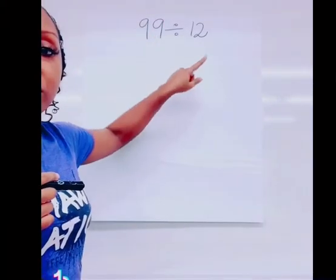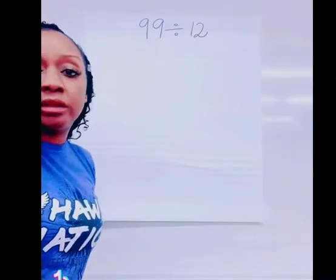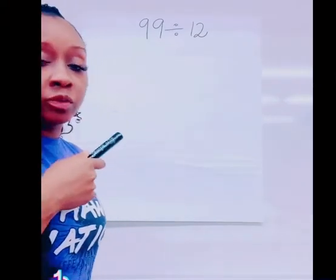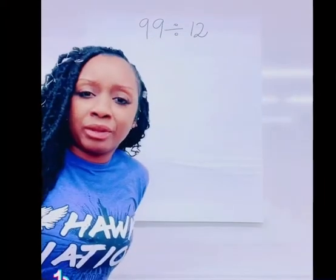This means that I'm going to start off with 99 of whatever, let's say dots. I'm going to break them up into groups of 12. What I could do is I could actually draw out 99 dots and then circle groups of 12, but who has time for that?